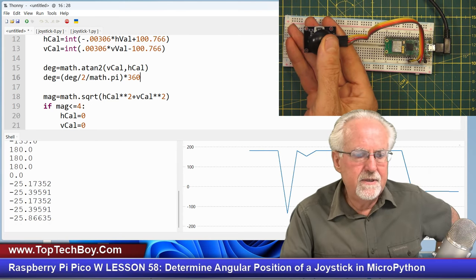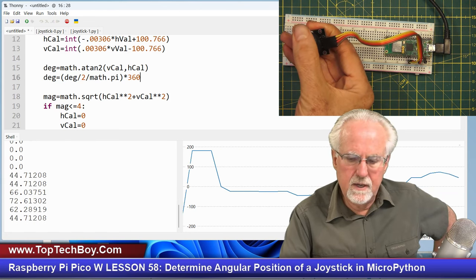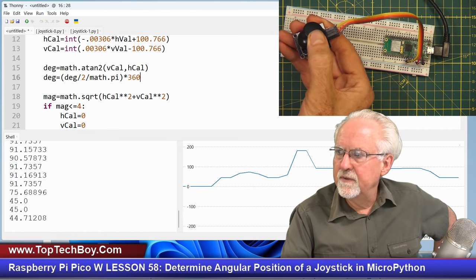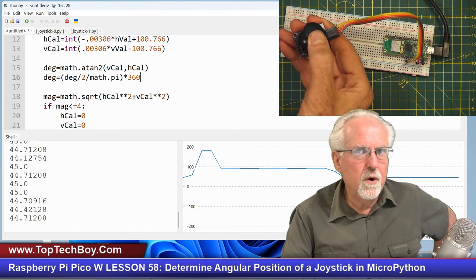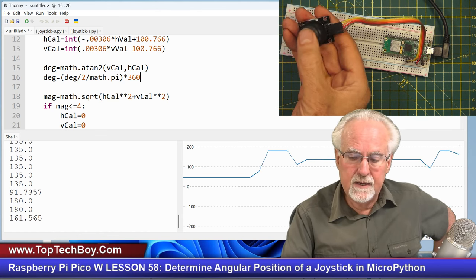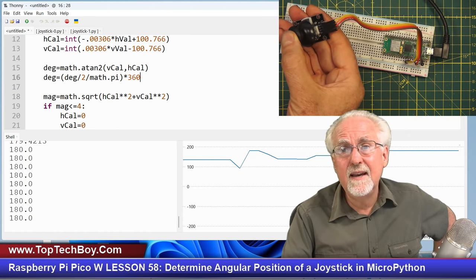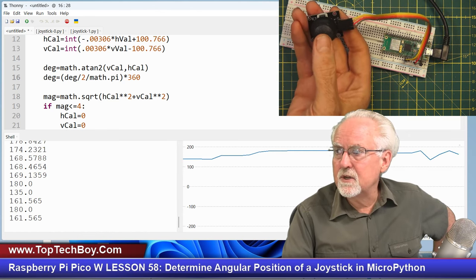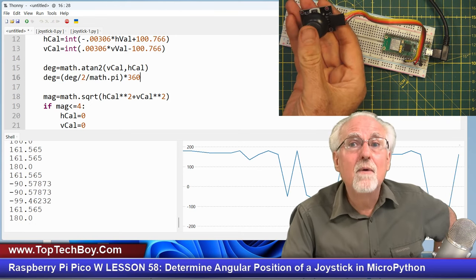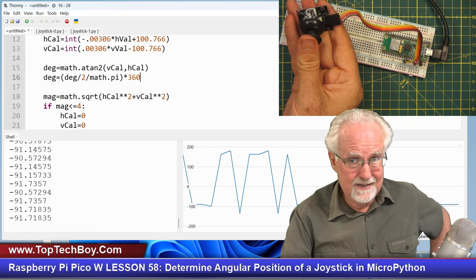Let's see if that works. I come to the right. I'm at 0. Straight up I'm at 90. That's good. The upper right is 45. That's good. The upper left is 135. That's right. And the left, if I go full left, I'm at 180. That's great. Now, let's go straight down. If I go straight down, I would expect 270, but I am getting minus 90.